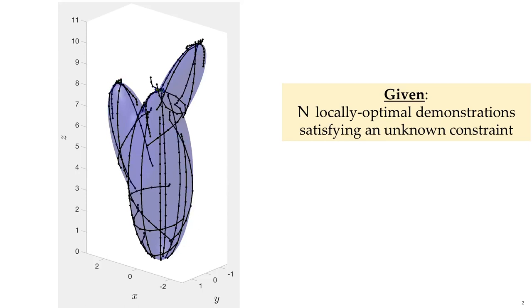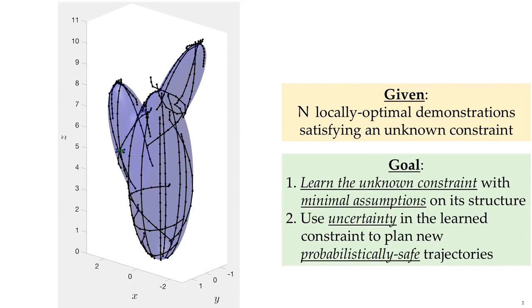We visualize such a case on the left with demonstrations in black and an unknown constraint in blue. We want to learn the unknown constraint from the demonstrations while making minimal structural assumptions, and to use the uncertainty in the learned constraint to plan new trajectories which are constraint-satisfying with some probability.